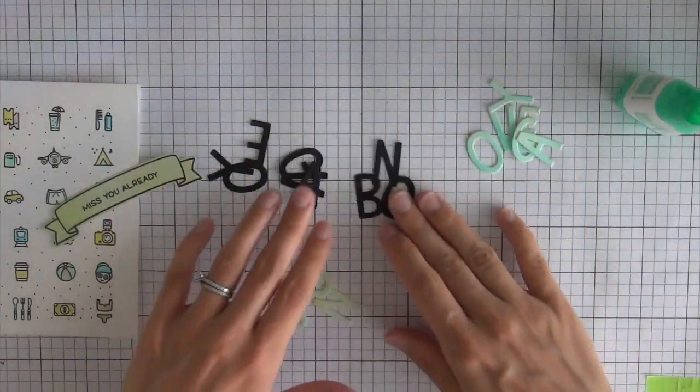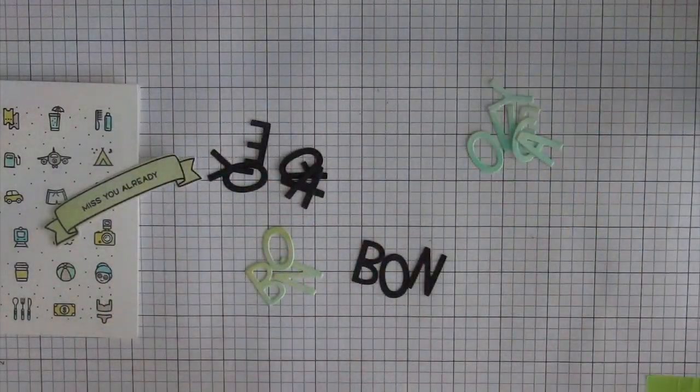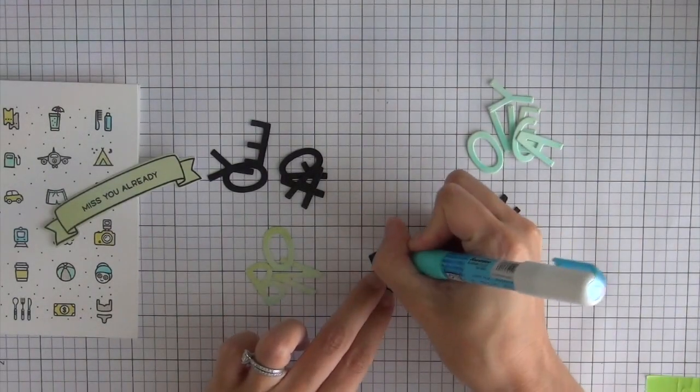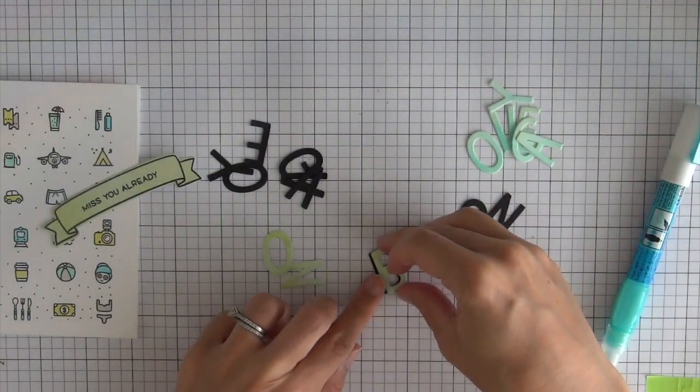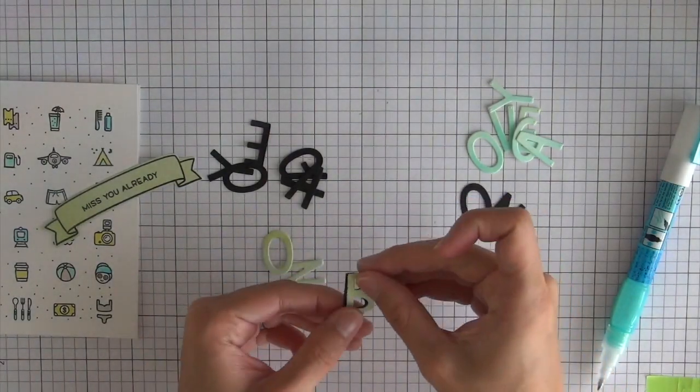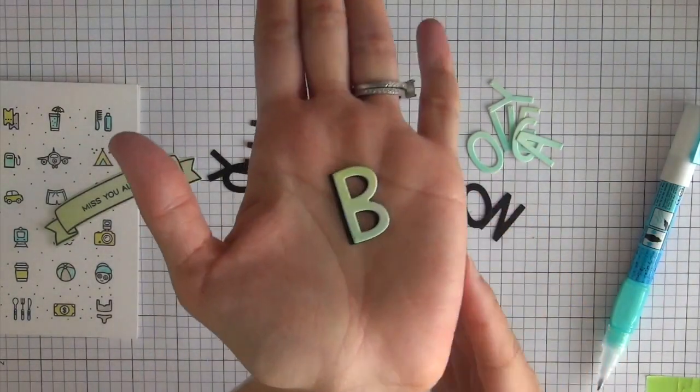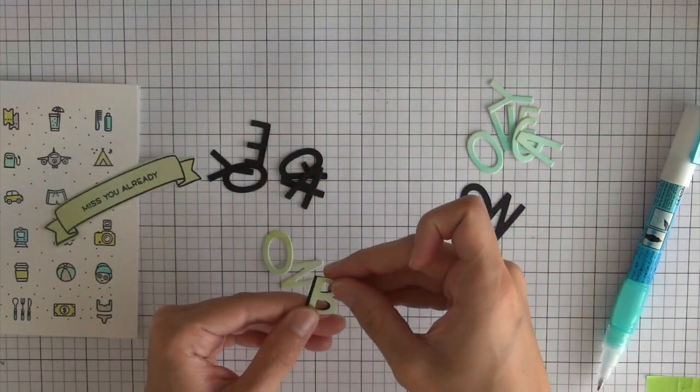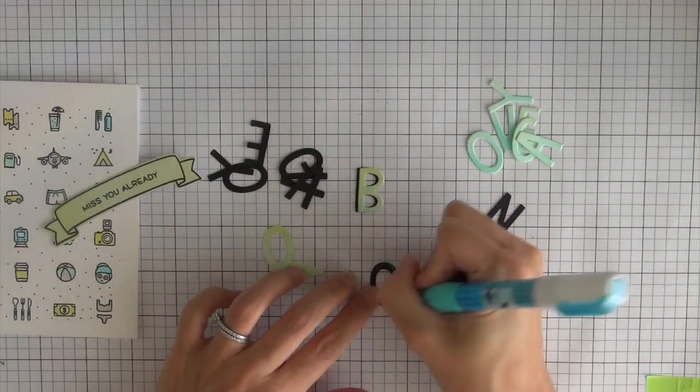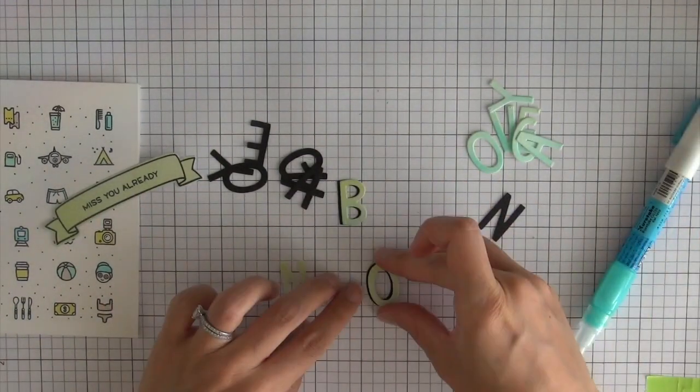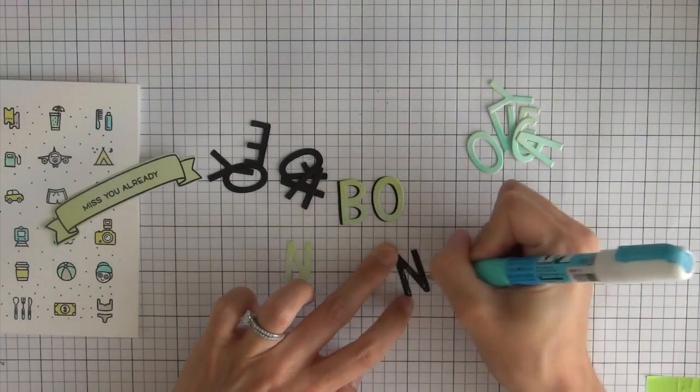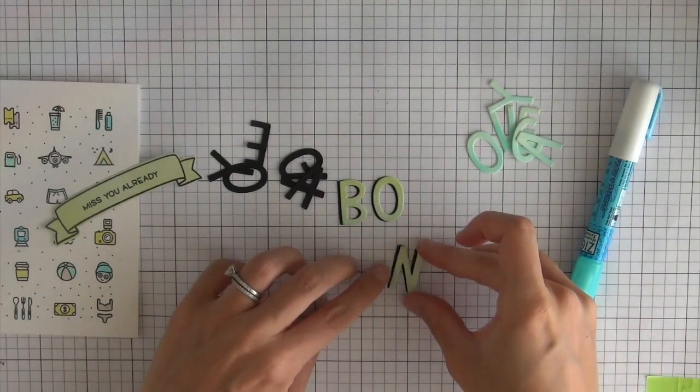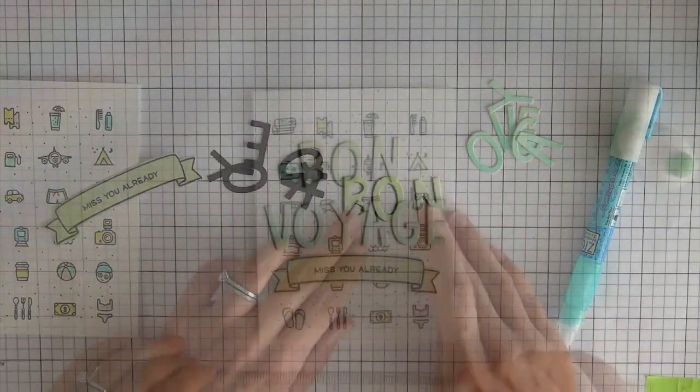I also die cut some black letters out, and I'm going to layer the colored letters onto the black ones just to give it a little bit of shadow. This will help the letters really pop out on the background so they can really stand out and you can really see them. I'm just going to adhere all of those letters together, and then we can work on assembling the card.